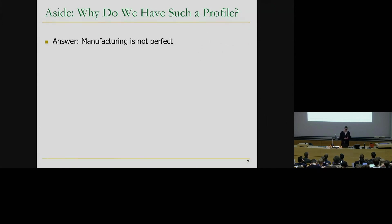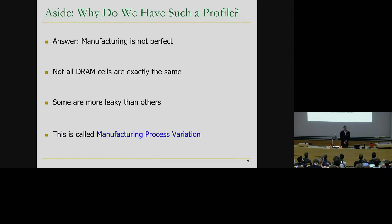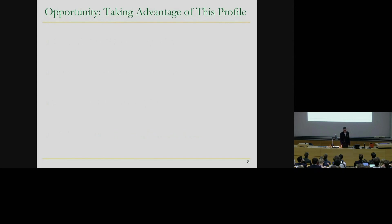The answer is that manufacturing is not perfect. A single DRAM cell, as you learned in the last lecture, consists of a single access transistor and a single capacitor. But those components cannot be perfectly manufactured - sometimes the capacitors and access transistors are smaller, sometimes they are bigger. That basically leads to the difference that some cells leak charge faster than the others. This is called manufacturing process variation. So here apparently we have the opportunity to take advantage of this profile.